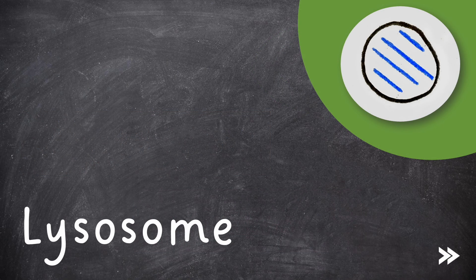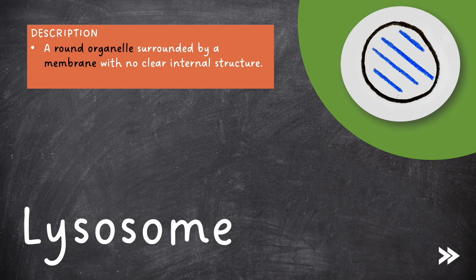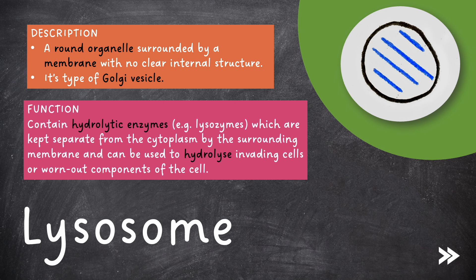Next we have lysosomes. A lysosome is a round organelle surrounded by a membrane with no clear internal structure. It is a type of Golgi vesicle. Lysosomes contain hydrolytic enzymes, which are kept separate from the cytoplasm by the surrounding membrane and can be used to hydrolyze invading cells or worn-out components of the cell.